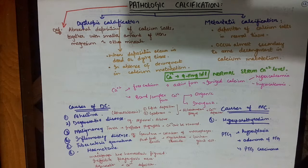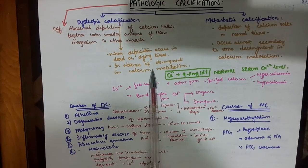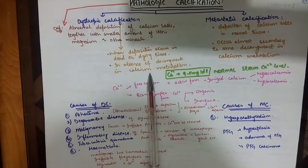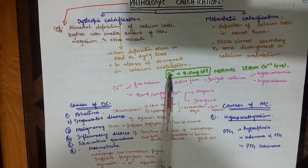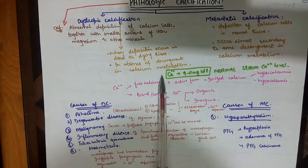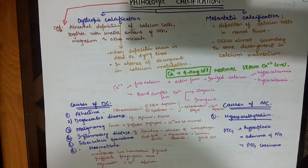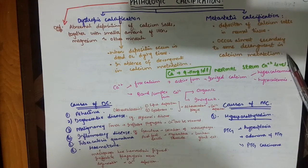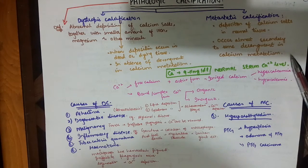Dystrophic calcification occurs when deposition takes place in dead or dying cells, in the absence of any derangement in calcium metabolism. Metastatic calcification, on the other hand, occurs in normal tissues and happens secondary to some derangement in calcium metabolism.